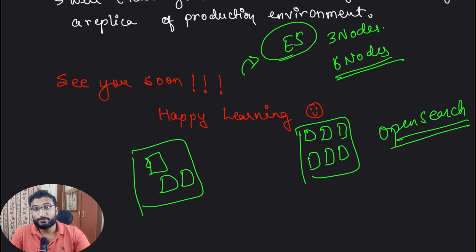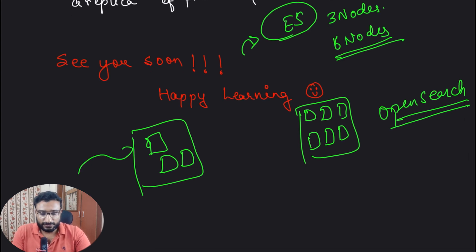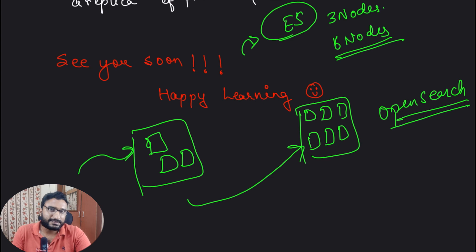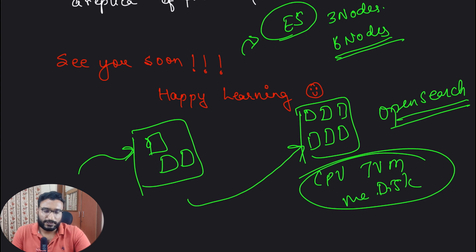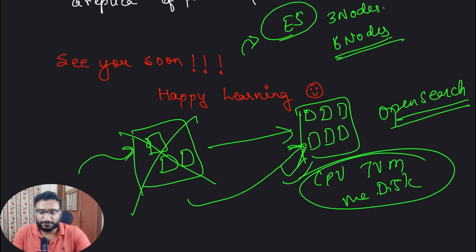In this case, Blue-Green deployment makes more sense. Canary deployment doesn't make sense here because we are not launching any kind of feature — we are changing infrastructure. Once the data has been fully migrated to 6 nodes and rebalancing is complete, and the metrics look good — CPU utilization, JVM, memory, disk — if all those metrics look good, then we can completely deprecate the old 3-node cluster and serve all traffic from the new 6-node cluster.